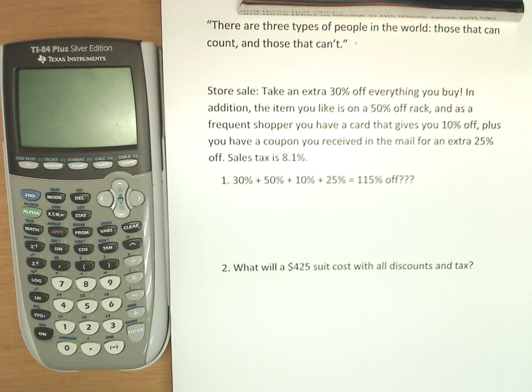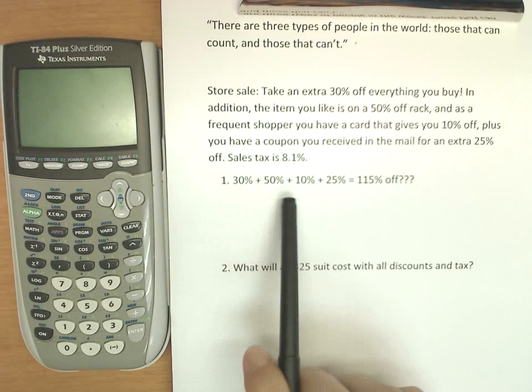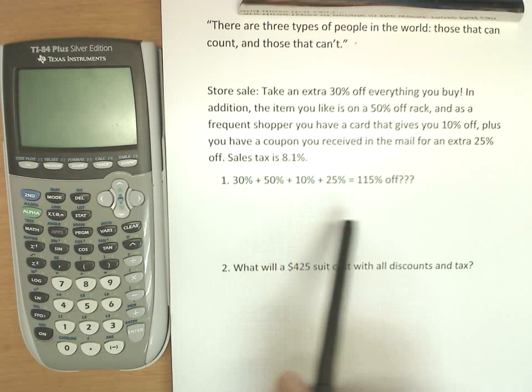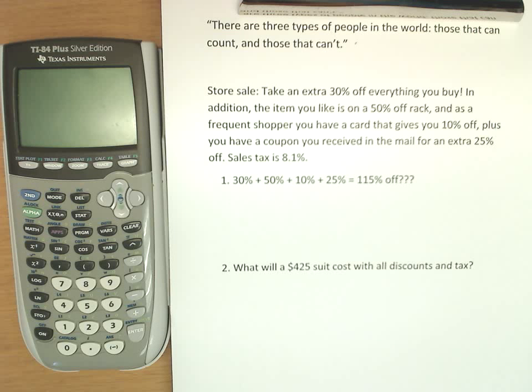So if you think about it, we have 30% off, 50% off, 10%, and 25% off, which adds up to more than 100% off—115% off. So the question is, is everything going to be free? Are they going to pay me to take items out of the store?